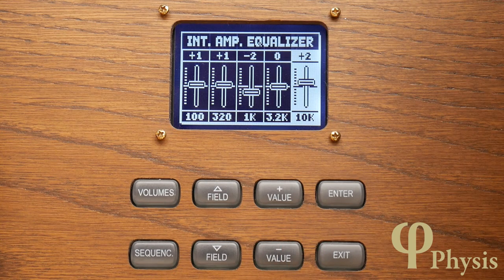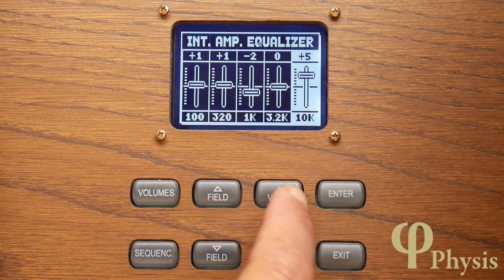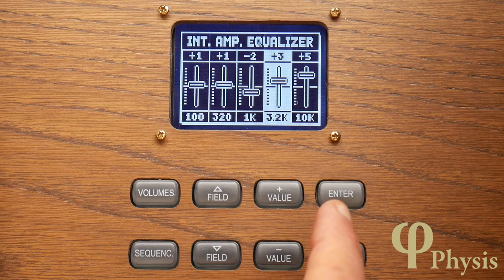So if you want the high frequency end of the organ to sound brighter for example, then you'd increase the sliders at 10 kHz and possibly 3.2 kHz a bit.